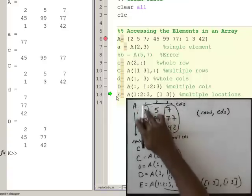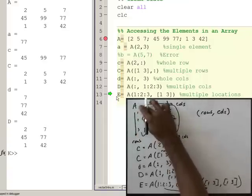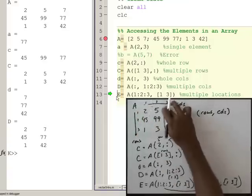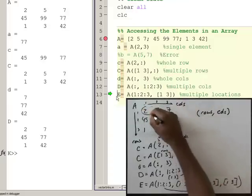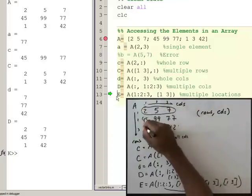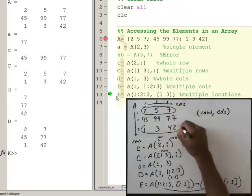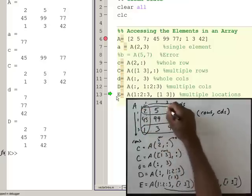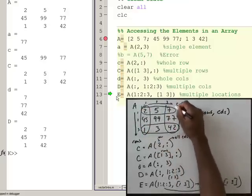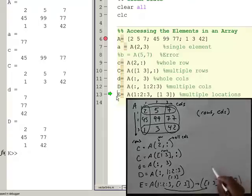So, what I wind up with is, let me do this in the right order, so I take rows 1 and 3, and columns 1 and 3, and so what I wind up with, are the coordinates 1, comma, 1.